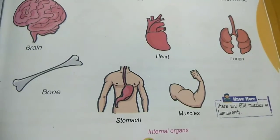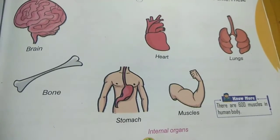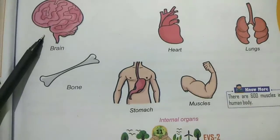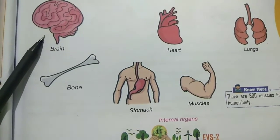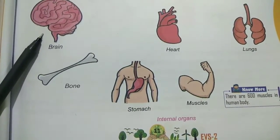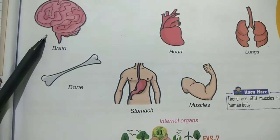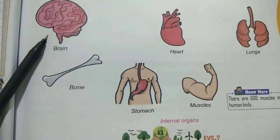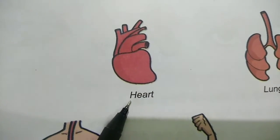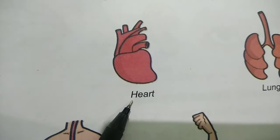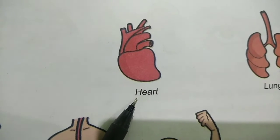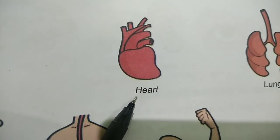Internal parts are inside and cannot be seen by us. Such as brain: the brain is present inside our head. It controls all our body functions. It helps us to think, learn and remember. Heart: the heart lies on the left side of our chest. It pumps blood to all parts of our body.